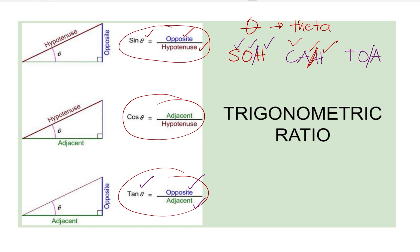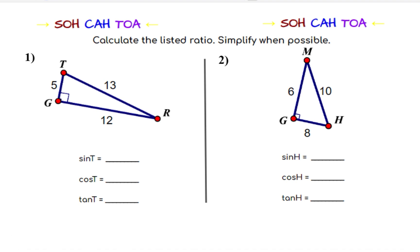All right, let's use this concept to try and answer these right here. Let's calculate the listed ratio. Simplify when possible. So sine T is our reference, or T is our reference angle. So let's label the sides, given that T is the reference angle. So this 12 is opposite. 13 is H, and 5 is our adjacent. So sine T, remember sine is SOH opposite over hypotenuse. So I'll substitute 12 for O and 13 for H. We can't simplify this any further. So we're going to keep our answers 12 over 13.